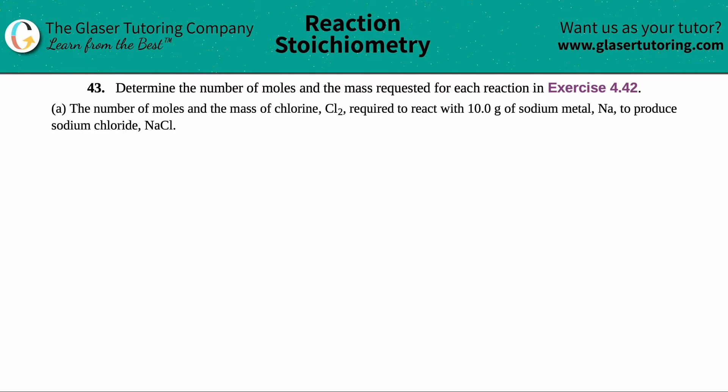Number 43, determine the number of moles and the mass required for each reaction in exercise 4.42. And then I have that question right here, and we're going to do letter A. So in this case, we have to find the number of moles and the mass of chlorine that's reacted with 10.0 grams of sodium metal, which is Na, and we're going to produce sodium chloride, which is NaCl.